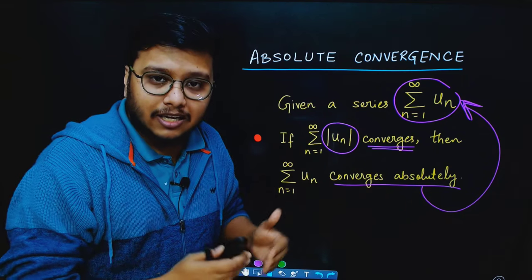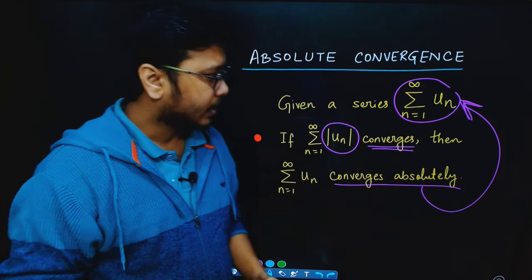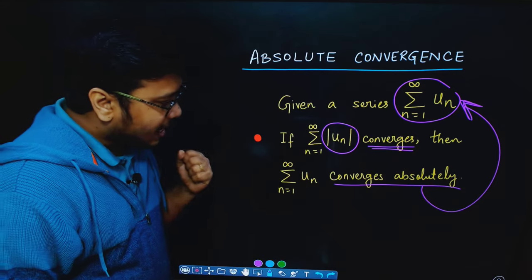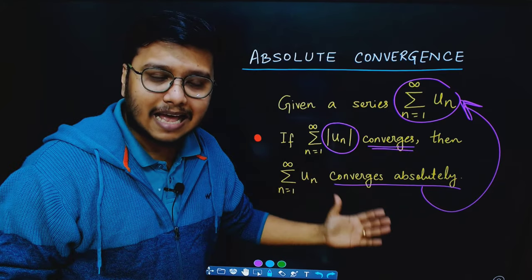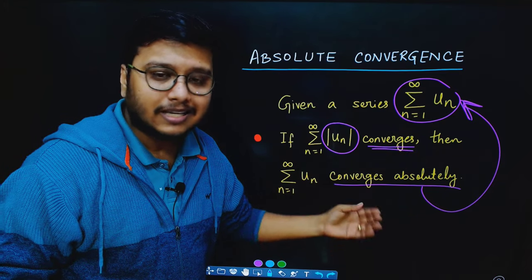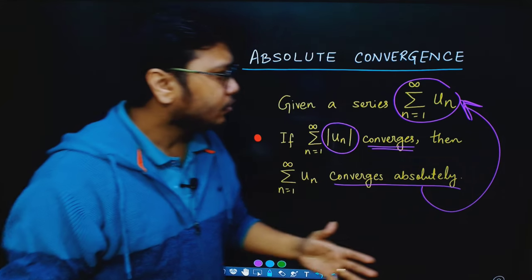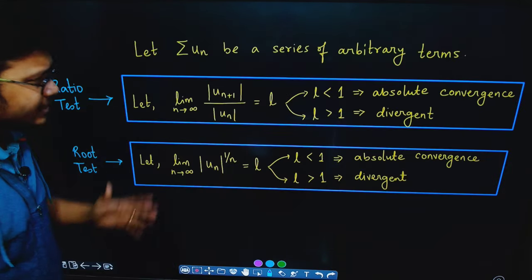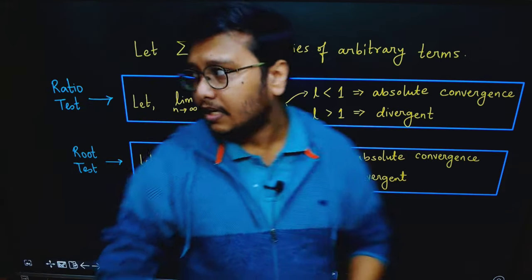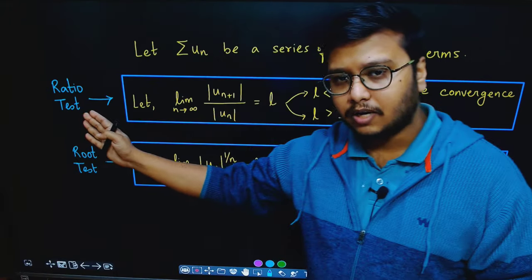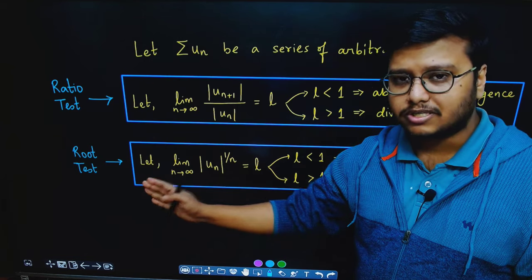A series may be convergent yet not absolutely convergent — in that case we call it conditionally convergent. To determine absolute convergence, we use two tests: the ratio test for absolute convergence and the root test for absolute convergence.